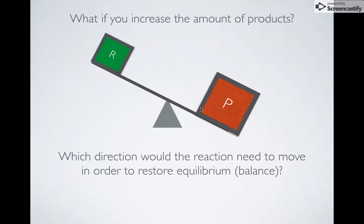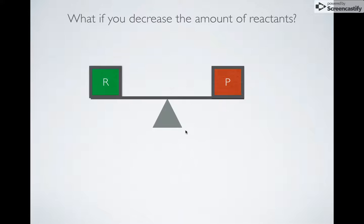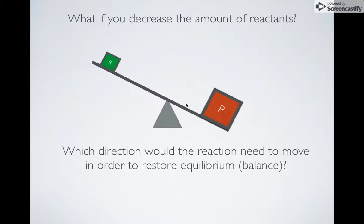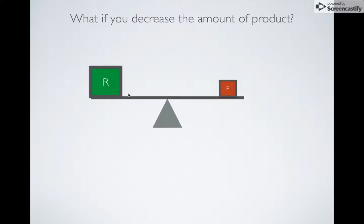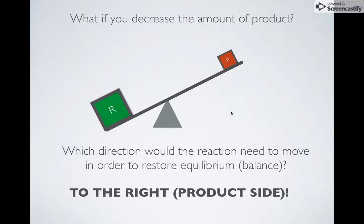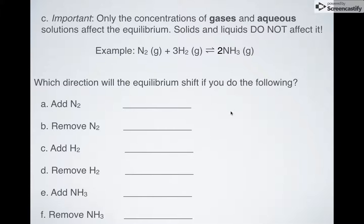What if I remove reactants? I'm going to need to shift it to the left in order to balance it back out. And if I decrease products, I'm going to need to make more products, so I'm going to have to shift it to the right in order to make more of what you took away. It's also important to realize that only gases and aqueous solutions matter. In equilibrium expressions, solids and liquids don't mean a thing to us.